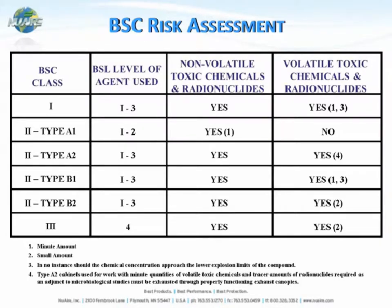For example, the Class II Type A1 is really used for BSL 1 or 2 agents and is only used for non-volatile toxic chemicals — it cannot be used for volatile toxic chemicals. For a Class II Type A2, you can use it for both non-volatile and volatile chemicals, but if you are using volatile toxic chemicals it must be exhausted to the outside and only in a minute quantity.